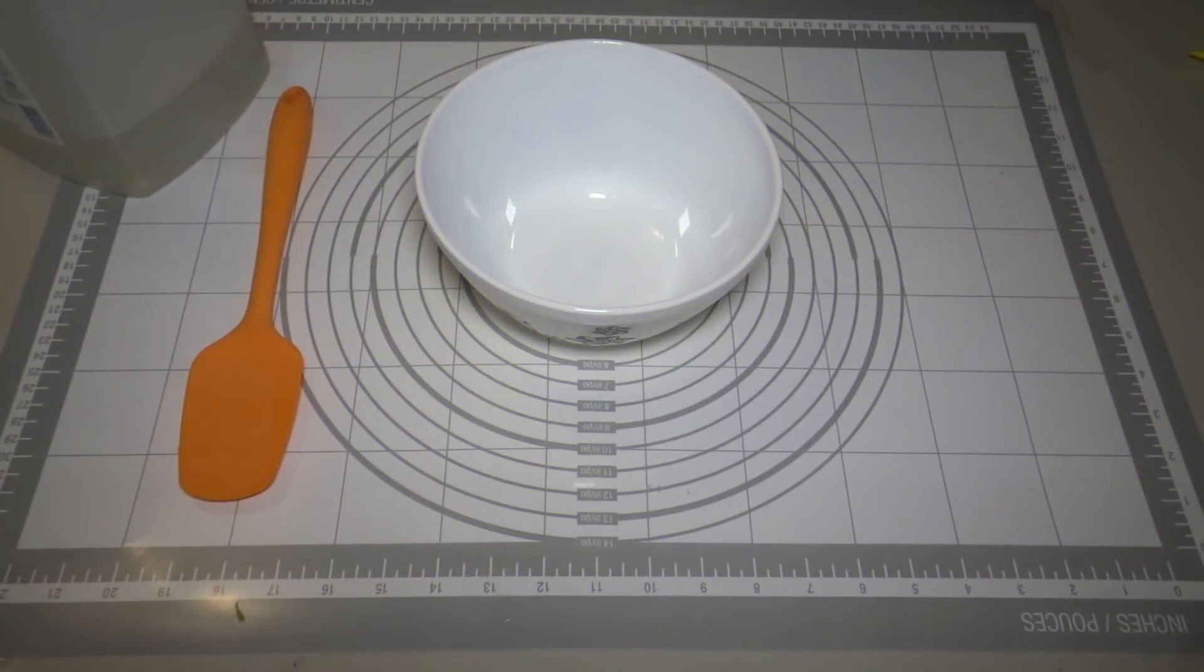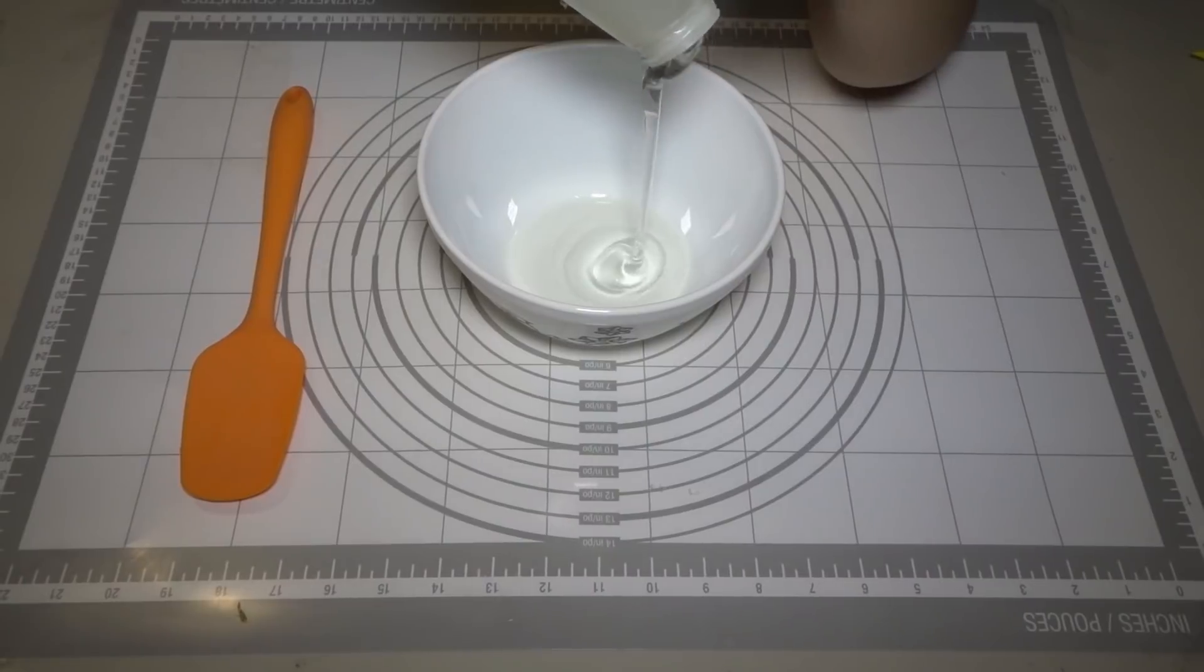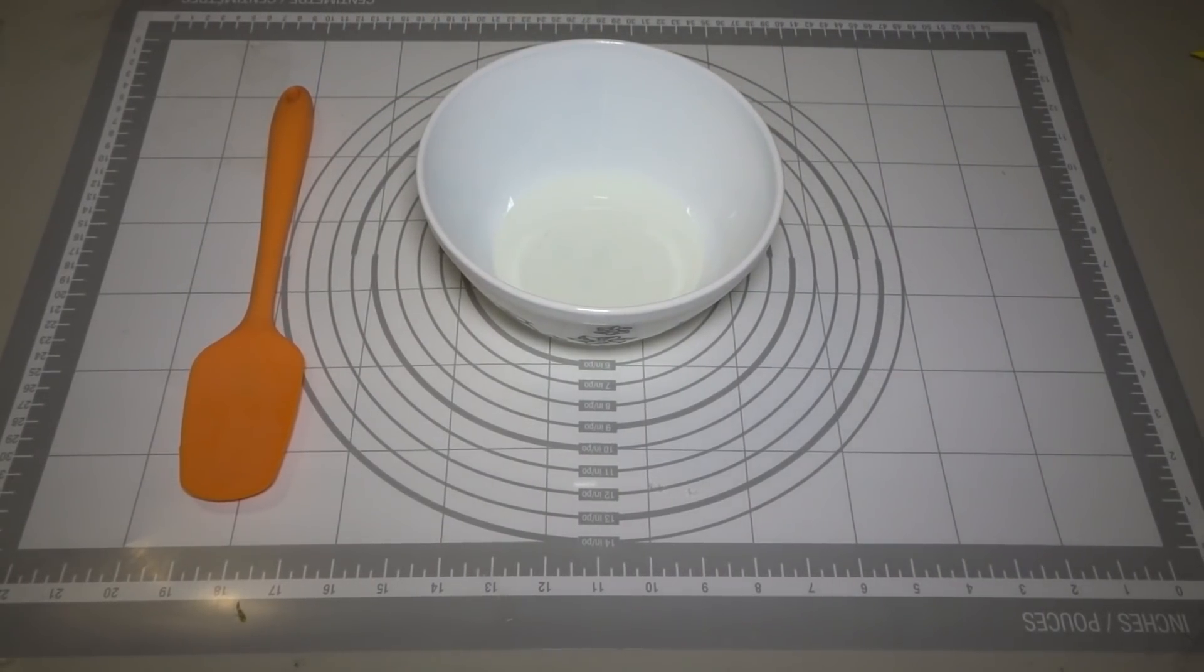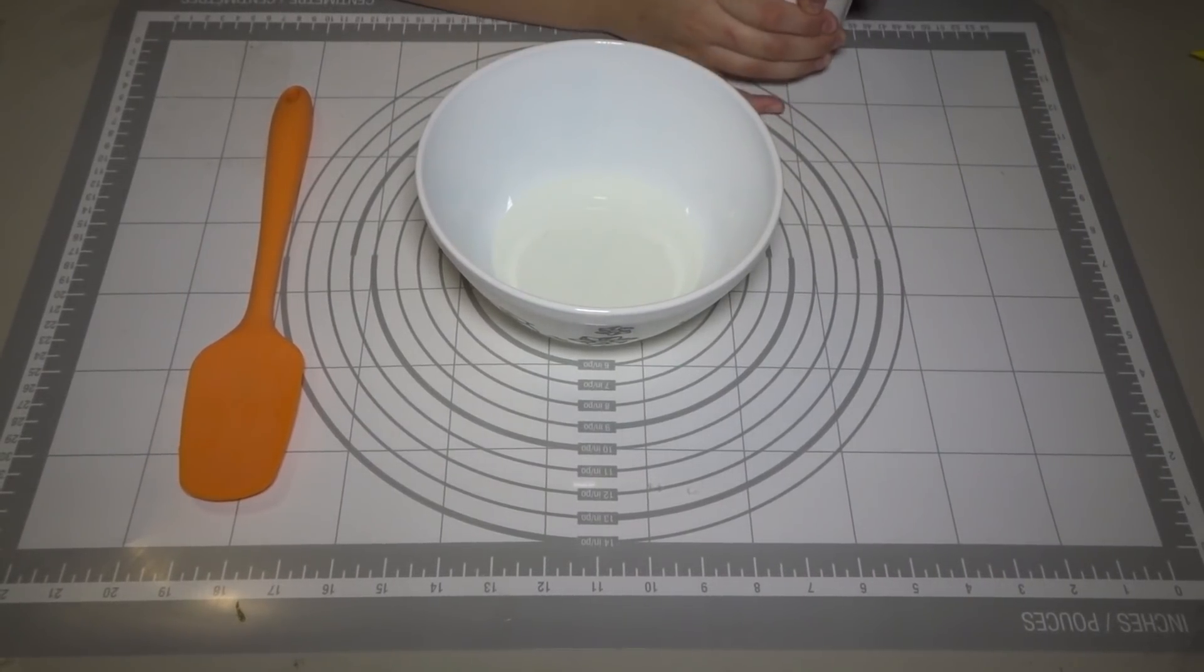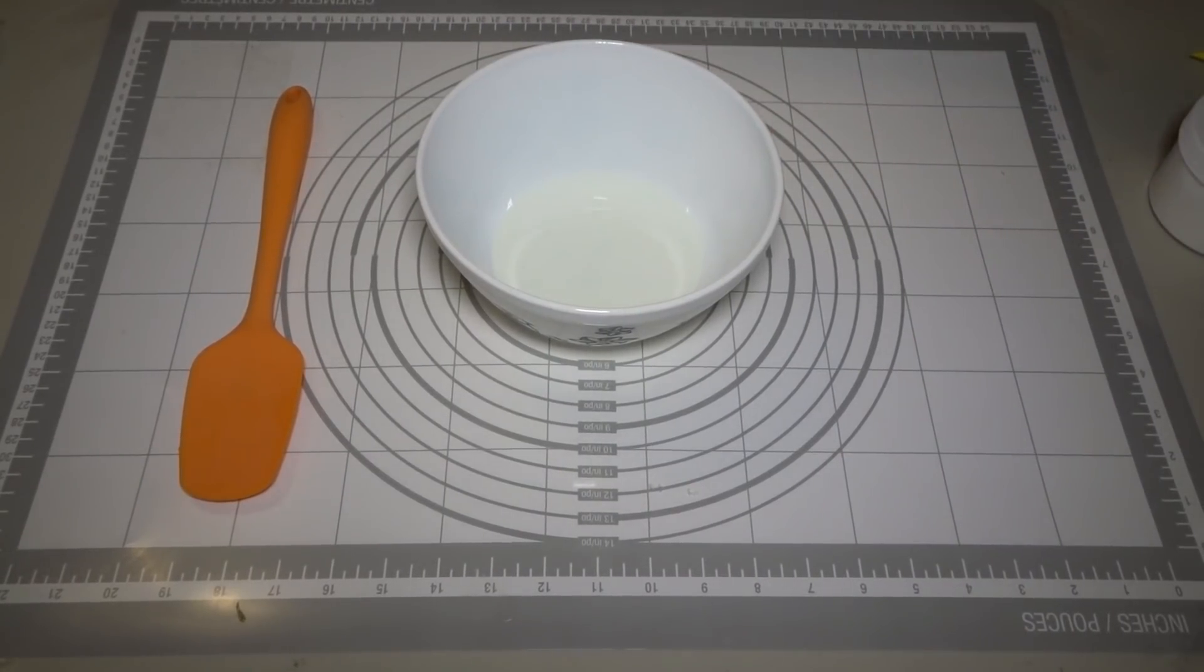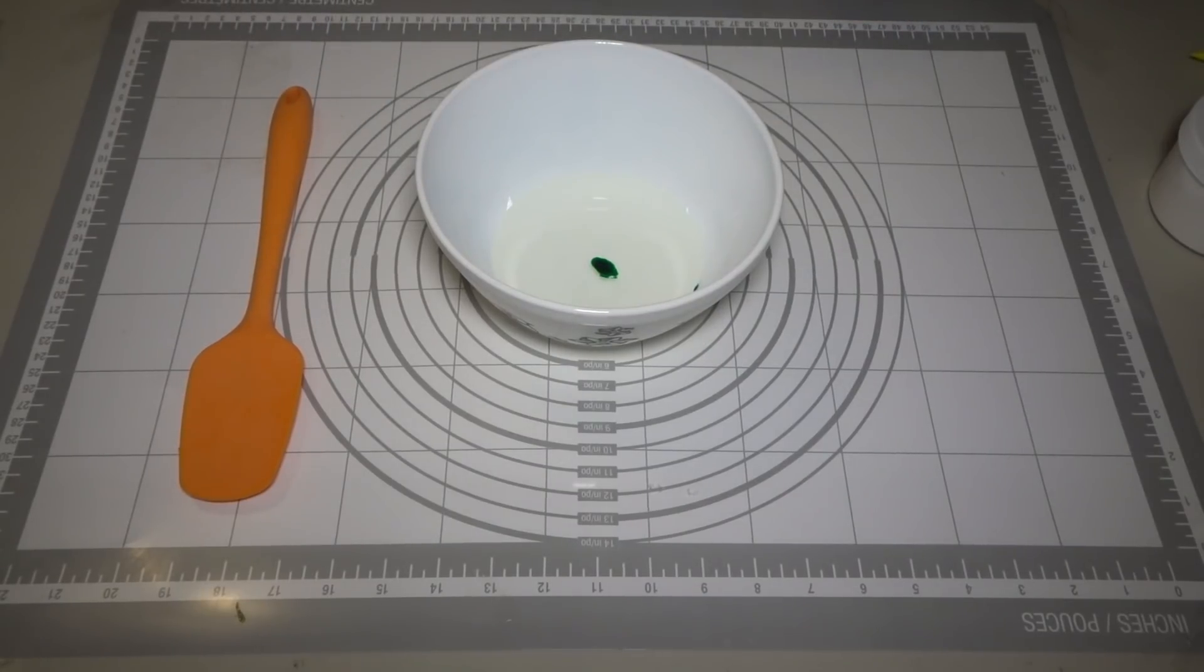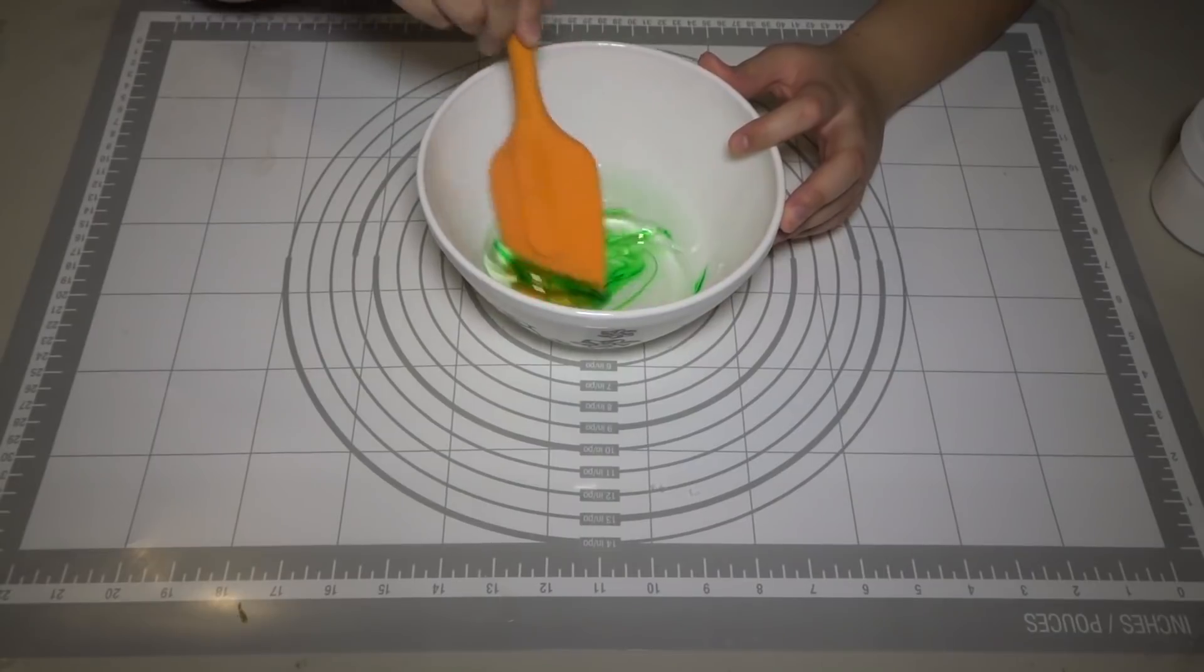To start off this crunchy slime, we are going to be pouring in some glue. I'm not going to make a very big batch, just a little batch, because we're testing it. If it turns out really good, maybe in the future I'll make a bigger batch or a giant batch. So the next thing we're going to add in is our food dye. So we're adding two drops of green and one drop of yellow. I don't know why I like this combination. I just think it makes the food dye look really pretty, so I just like it.